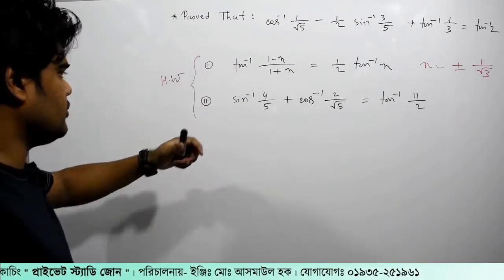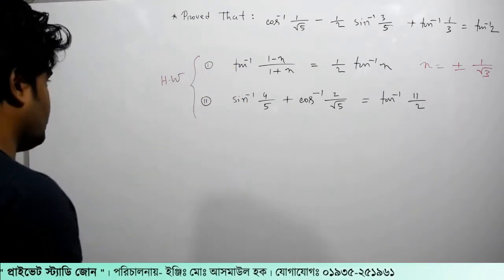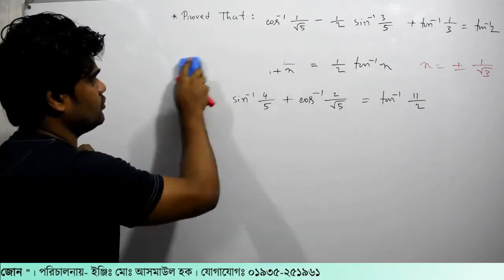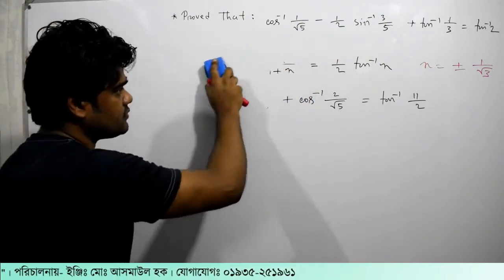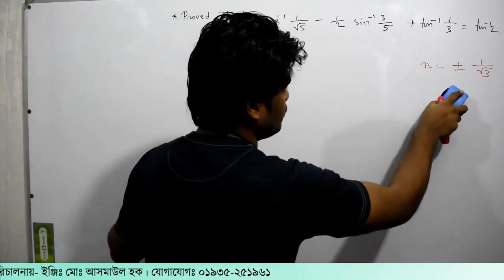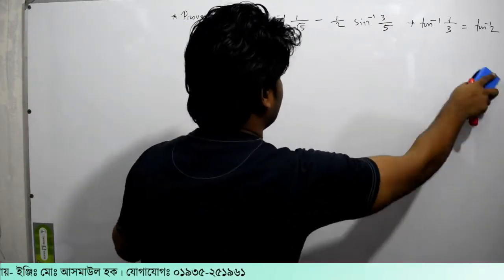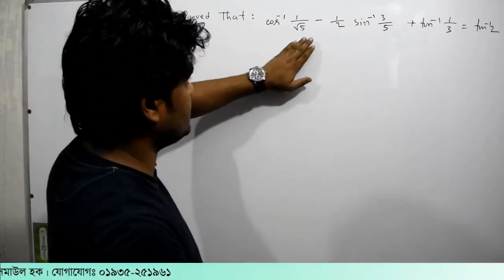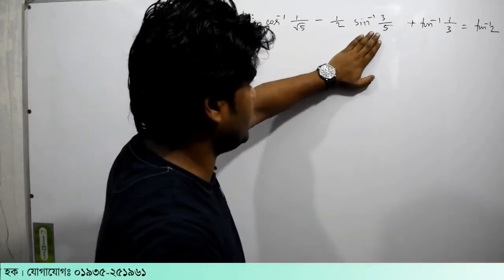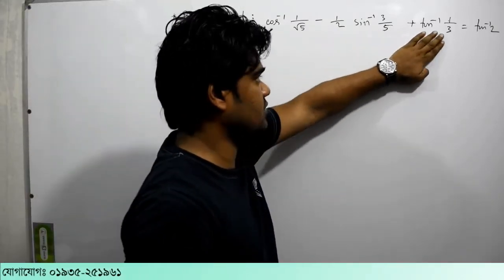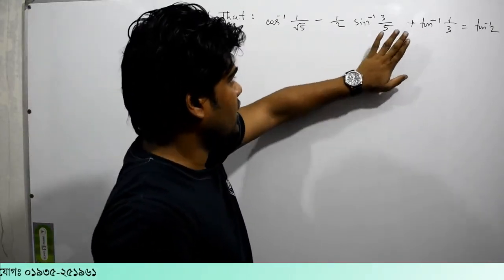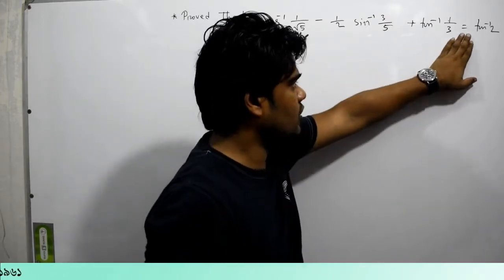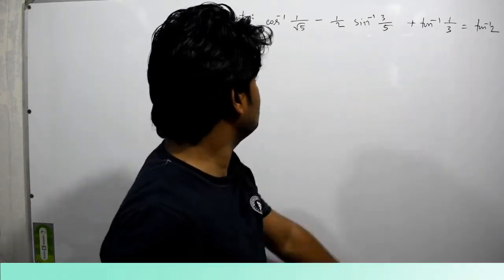Let's turn to the homework problem. We will do the same way. The same approach is important: cos inverse, sin inverse — we will do it this way — equal to tan inverse 2.